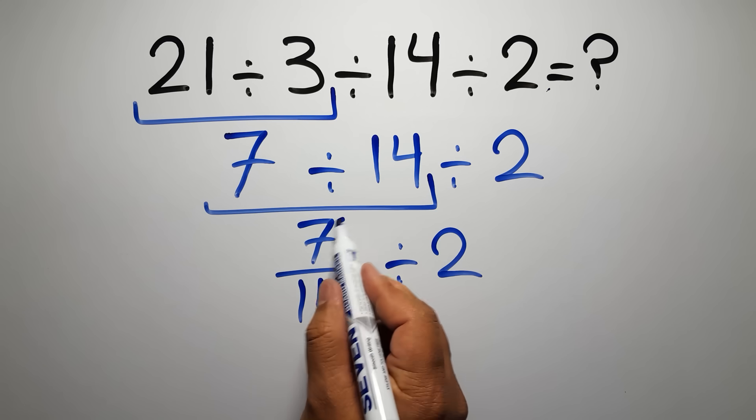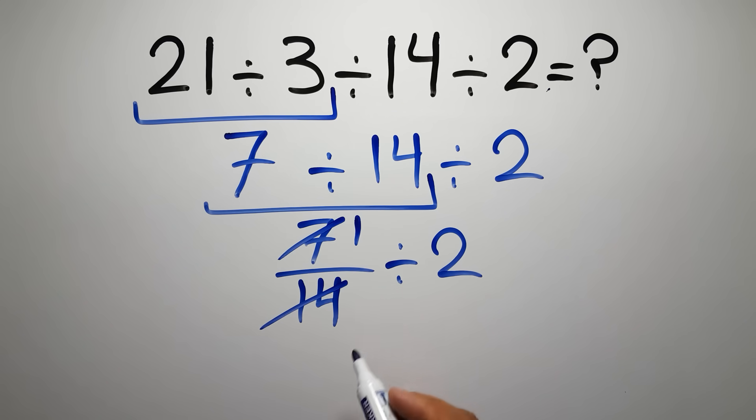7 divided by 7 gives us 1, and 14 divided by 7 gives us 2, so we have 1 over 2 divided by 2. According to the KCF rule, K stands for keep, C stands for change, and F stands for flip.